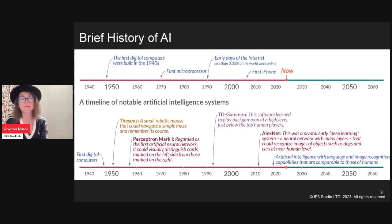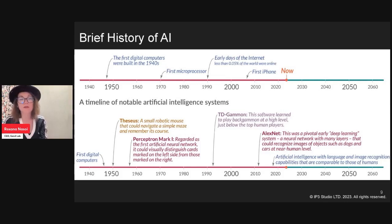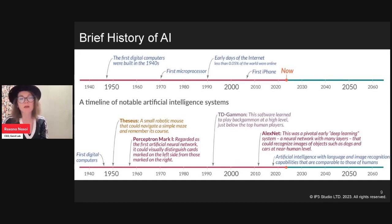The 1990s were an interesting time for AI — Japan launched a massive national AI project but had to abandon it because financing dried up and the hardware capacity to run large-scale AI wasn't there. Looking back, they probably would have been much further along in development if they'd managed to keep it going for 30 years. Then in 2010 a pivotal early deep learning system called AlexNet had many layers and could recognize images of dogs, cats, and cars at near-human level.